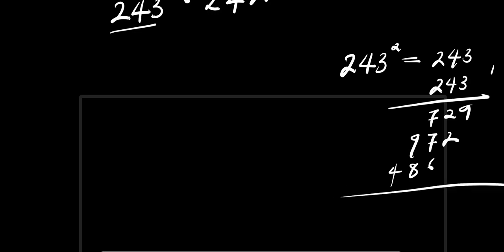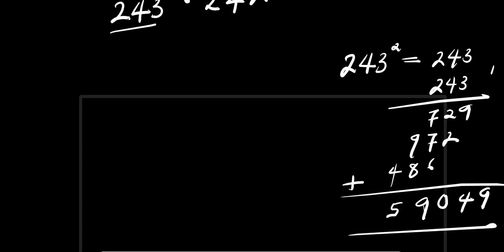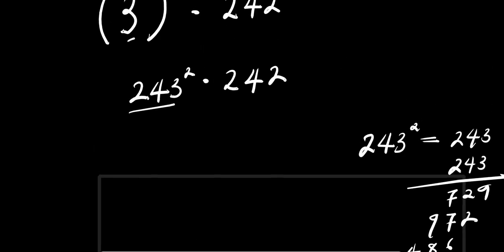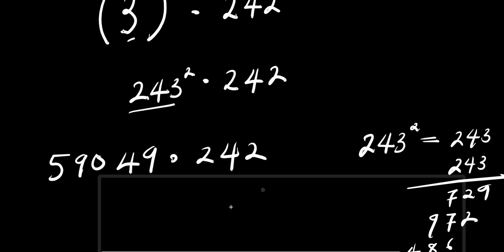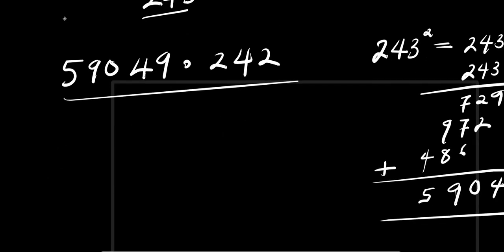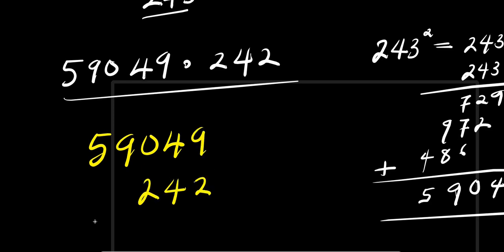Adding everything together: 9; 4; 20, carry 0; 2; 11; 19, carry 1; 8; 5; 5; 9; 4; 9 — so this gives 59,049. Then 59,049 times 2 — we need to multiply this out to get our intermediate answer: 59,049 times 2 is 118,098... then we proceed with 242.